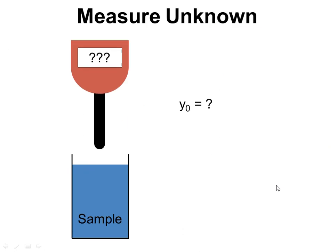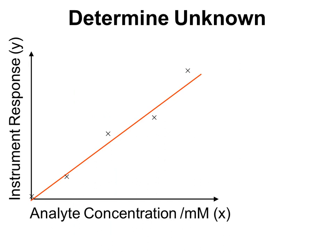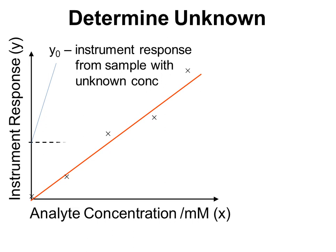The first thing that we have to do is to measure our unknown. So we put the instrument into the sample, wait for a reading, and that gives us something that we refer to as y0, the instrument response for the unknown sample. What we have to do then is come back to our calibration graph, look at where y0 appears, and then move across to the line of best fit, and then move down to the analyte concentration. Our x0 value is the concentration of the unknown sample.